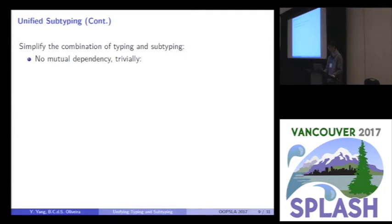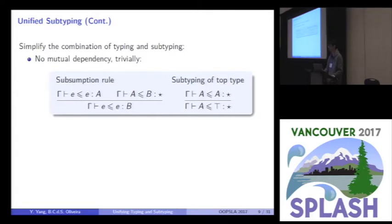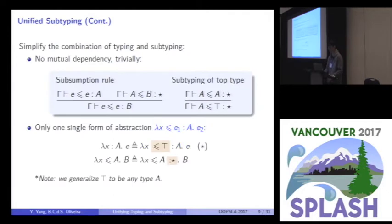By using this concept, we can simplify the combination of typing and subtyping. We can solve the previous two problems trivially. First, there will be no mutual dependency, because we have only this unified subtyping relation. And the previous two rules can be rewritten like this, so there's only one relation and no mutual dependency. Second, we can just use one single form of abstraction by combining typing and subtyping together in the quantifier, like this.